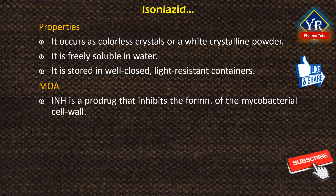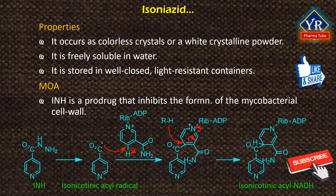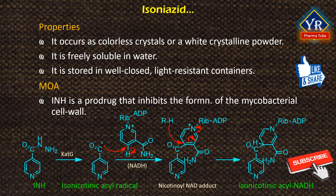Mechanism of action of isoniazid. Isoniazid acts by inhibiting the synthetic pathways leading to mycolic acid, an essential component of mycobacterial cell walls. It is activated in bacterial cells by a catalase-peroxidase enzyme, abbreviated KATG. KATG catalyzes the formation of the isonicotinic acyl radical, which spontaneously couples with NADH to form the nicotinoyl-NAD adduct. This complex binds tightly to the enoyl-acyl carrier protein reductase (InhA), thereby blocking the natural enoyl-acyl carrier protein (ACP-M) substrate and the action of fatty acid synthase. This process inhibits the synthesis of mycolic acids, which are required components of the mycobacterial cell wall.